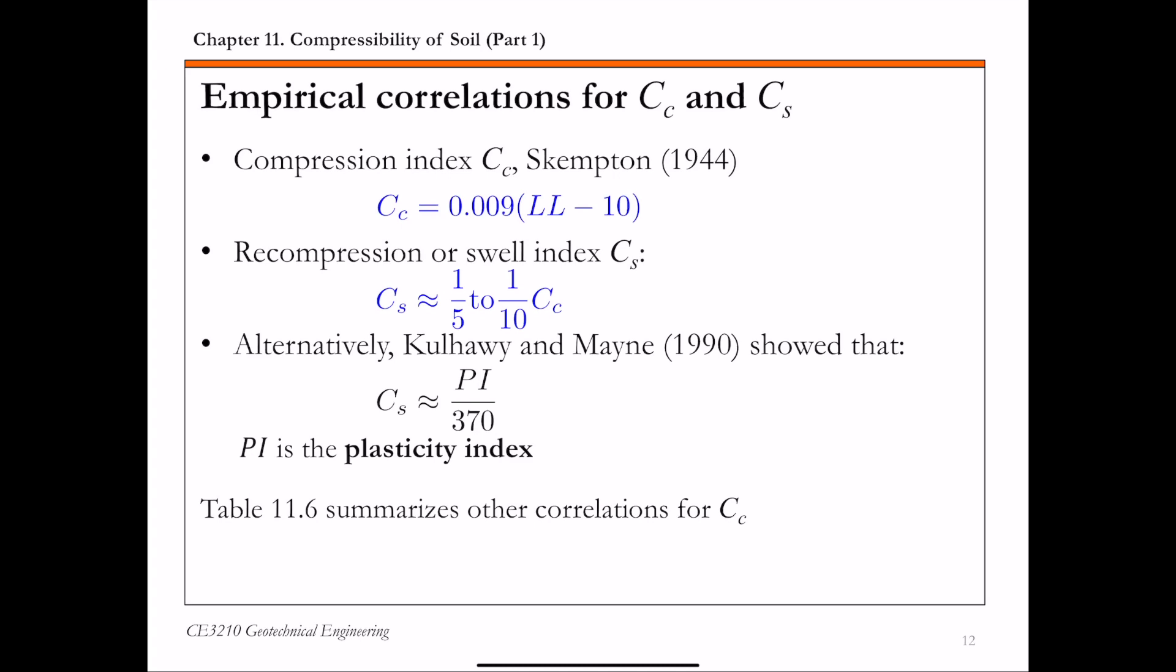So the 1D consolidation lab test is probably one of the most reliable way to get CC and CS. Alternatively, there are some empirical correlations that you can use to get some rough estimation. For a compression index, CC, the Skempton correlation is one of the most commonly used, where LL stands for liquid limit. For recompression or swell index, CS, a rule of thumb is CS is approximately one-fifth to one-tenth of CC. And alternatively, you can also use plastic index to estimate CS. Other correlations are also available in table 11.6 in your textbook for the compression index CC.